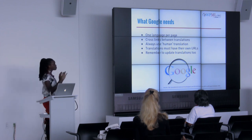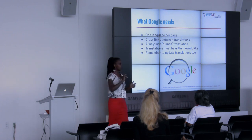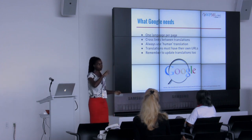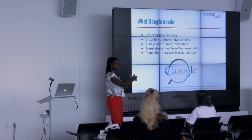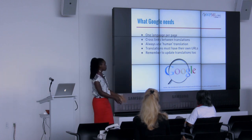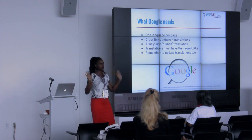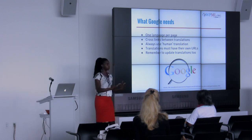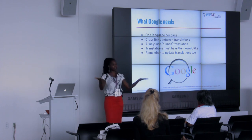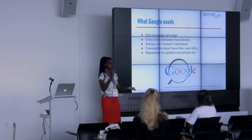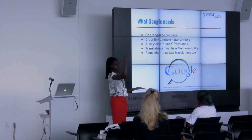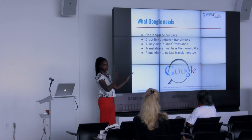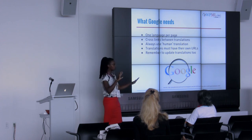So what Google needs: Google needs you to have one language per page because they filter search results based on language. That side-by-side translation — English in one column and Spanish in the next — is really confusing for Google. They need cross-links between translations, so they want those pages to be relational. They want HTML tags that say: if you want the Spanish version of this page, here is the URL for the Spanish page, and vice versa.